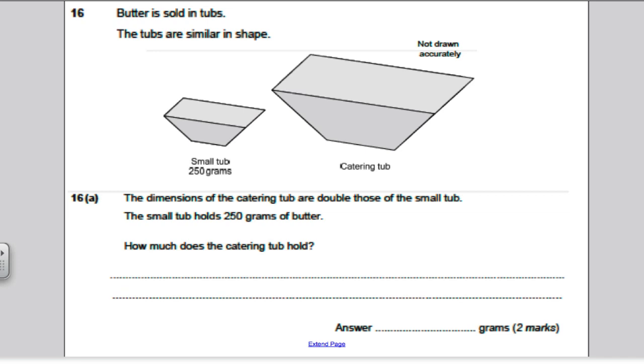Butter is sold in tubs. The tubs are similar in shape. The dimensions of the catering tub are double those of the small tub. The small tub holds 250 grams of butter. How much does the catering tub hold? It's a two-mark question. The dimensions mean the lengths are doubled. So if the lengths are doubled, the scale factor for lengths is 2.